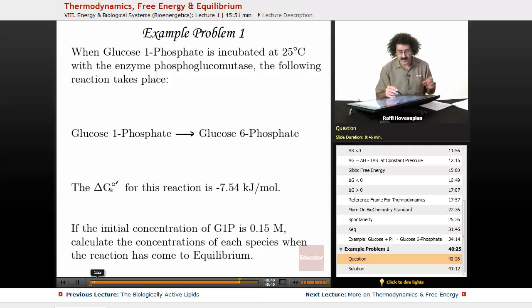The delta G for this reaction is negative 7.54 kilojoules per mole, so it is spontaneous as written. The question is, if the initial concentration of glucose 1-phosphate is 0.15 molar, calculate the concentrations of each species when the reaction has come to equilibrium.